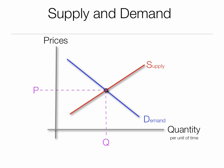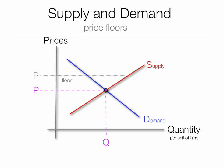Now let's look at price floors. A price floor is a government-imposed minimum price — prices can't go below it. In this case the market tries to push prices down, but the government won't let it fall. Quantity demanded is at the lower level QD, and quantity supplied is higher, hence there's a surplus.